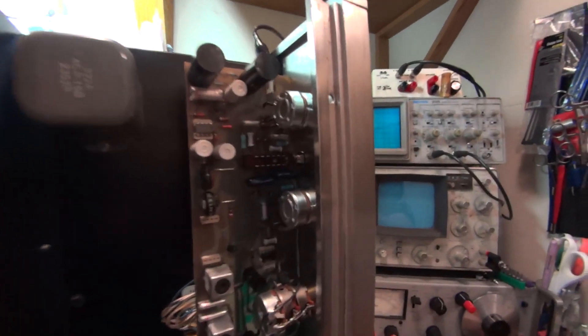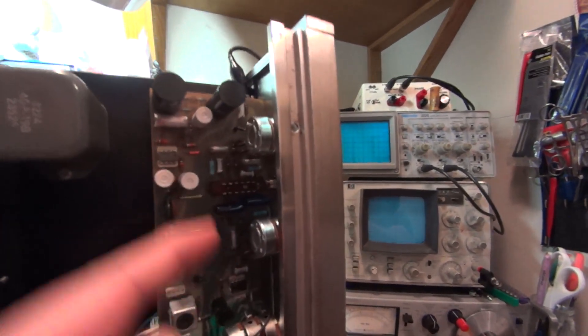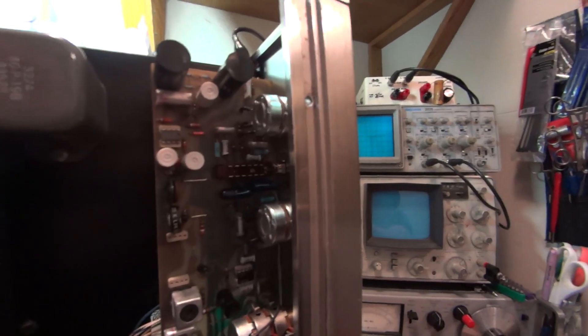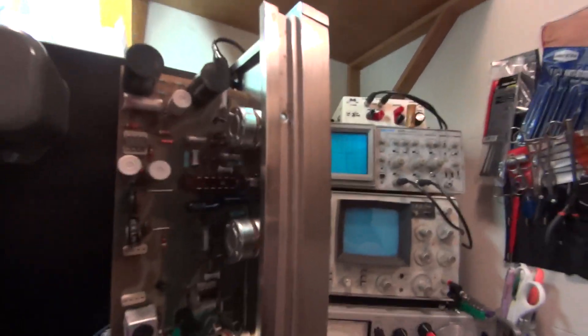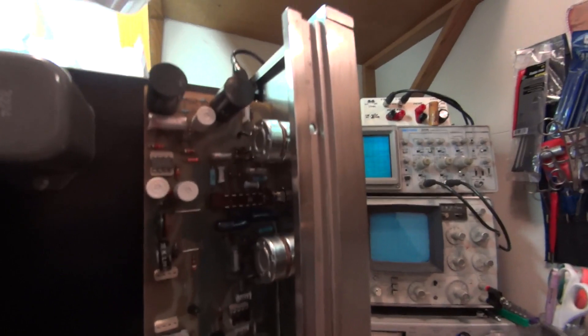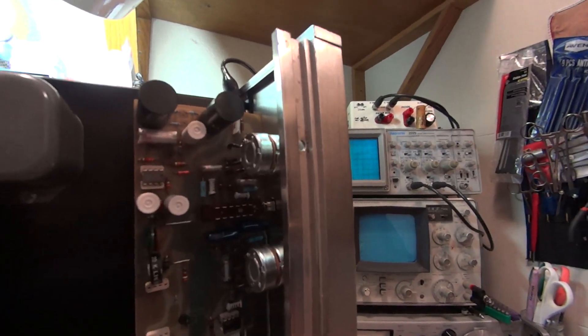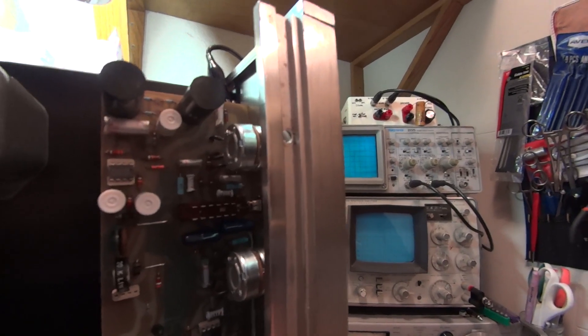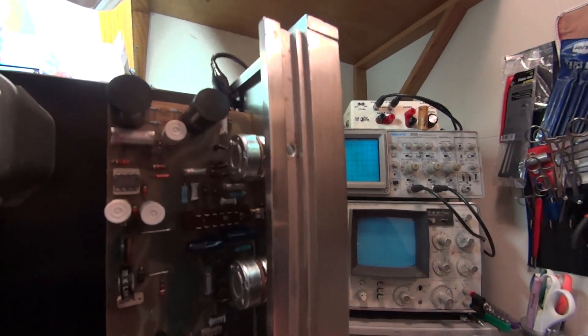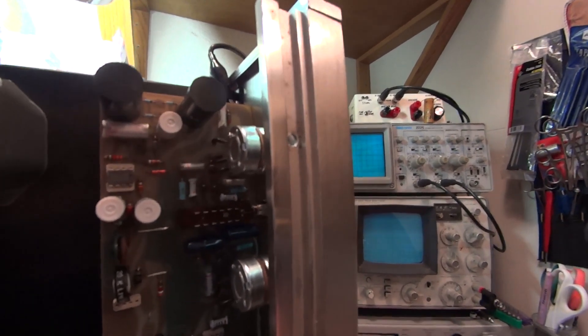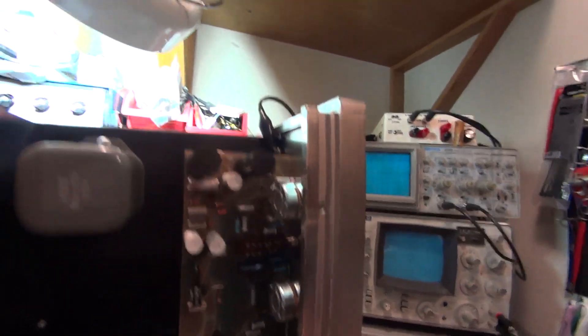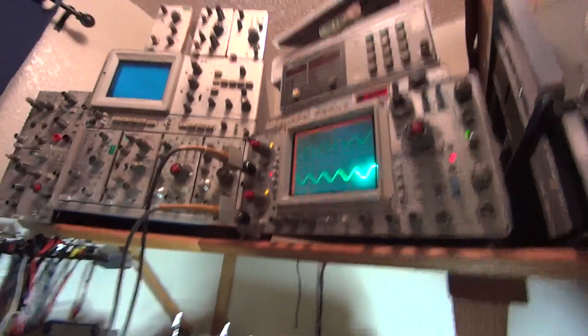So here are our new potentiometers - the treble and the bass. They had to be modified because the new potentiometers don't have the same size shaft as the old ones, so I had to whittle the shafts down with the Dremel tool in circles. Let's take a look at the oscilloscope.